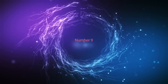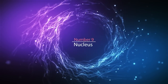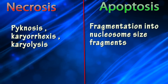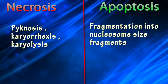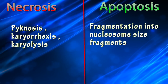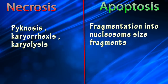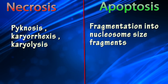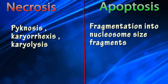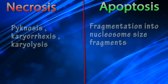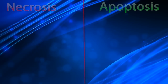Difference number nine: nucleus. When the necrosis process occurs, the nucleus undergoes pyknosis, karyorrhexis, and karyolysis. But in the apoptosis process, the nucleus fragments into nucleosome-sized fragments.